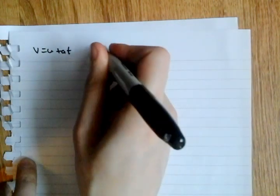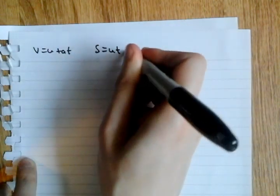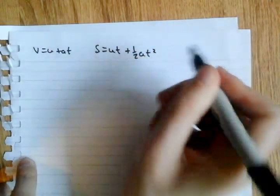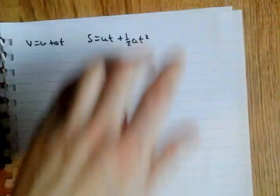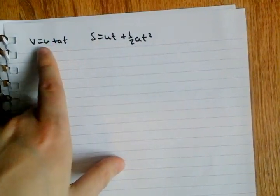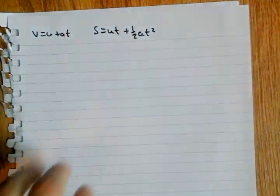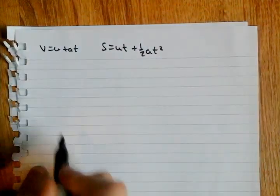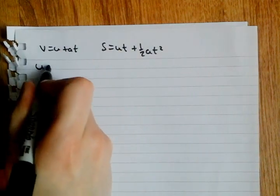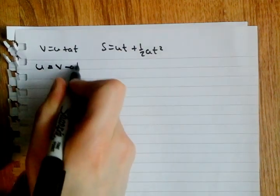So, if I just quickly rewrite what we have. We have V equals U plus AT and S equals UT plus a half AT². Now, for the next three, all you need to do is rearrange this first equation for the different variables and substitute into this one. That's exactly what we're going to do. So, first, let's do it for U. U is equal to V minus AT.